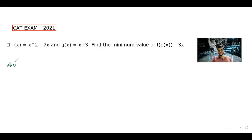But how do you understand how to do it? It's basically calculus. What you need to do is you have a function f of x equals x squared minus 7x, and g of x is a function x plus 3. You have to find the minimum value of f of g of x minus 3x.